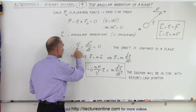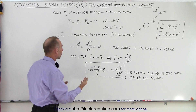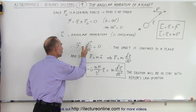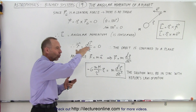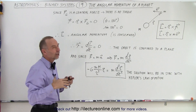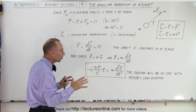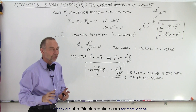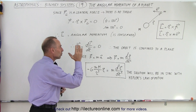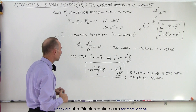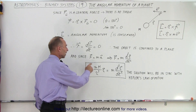The torque can be written as the change with respect to time of the angular momentum. Since the torque is zero, the change in angular momentum must be zero, and therefore the orbit is confined to a plane. That's why planets always stay within the same plane. Of course, since there are other forces involved in the solar system there will be some slight variation, but if you only consider the force between the star and the planet, the orbit will be confined to a plane.